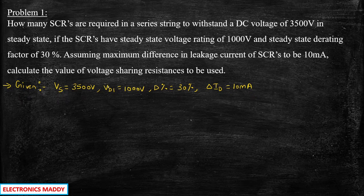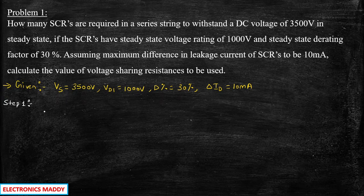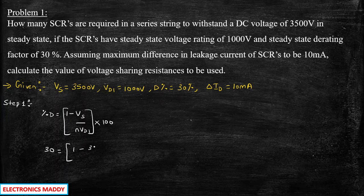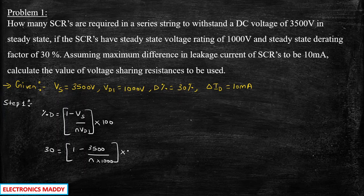Once this is done, step one is to find the value of N — the number of series connected SCRs. We will be calculating the value of N from the expression: percentage D equals 1 minus Vs, whole divided by N into Vd1, into 100. Substituting the value of D as 30, Vs as 3500, and Vd1 as 1000, and solving this expression, you will be getting N equal to 5.